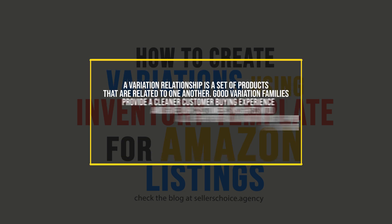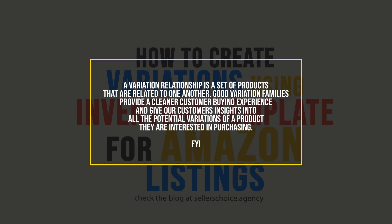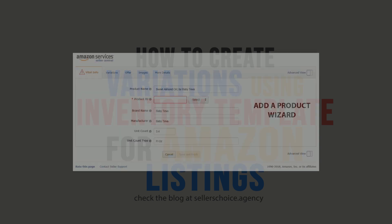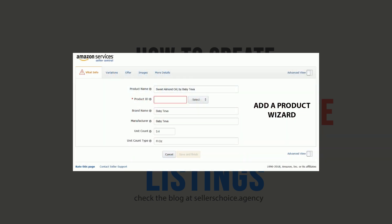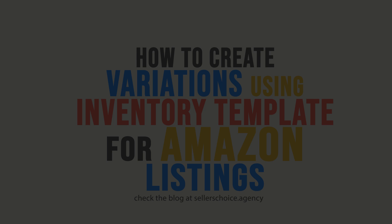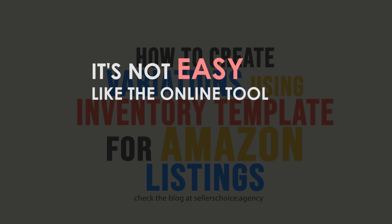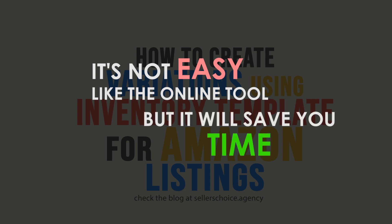A variation relationship is a set of products that are related to one another. Good variation families provide a clear customer buying experience and give customers insights into all the potential variations of a product they're interested in purchasing. Adding a variation using the Add a Product wizard on Amazon is really easy, but this time we will add variations using the inventory file template. It may not be as easy as the online tool,